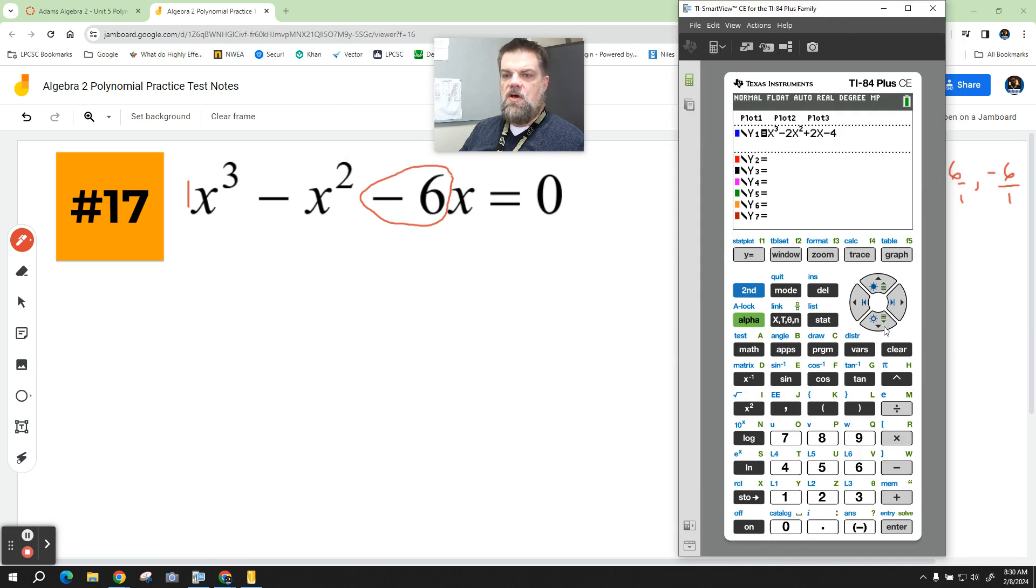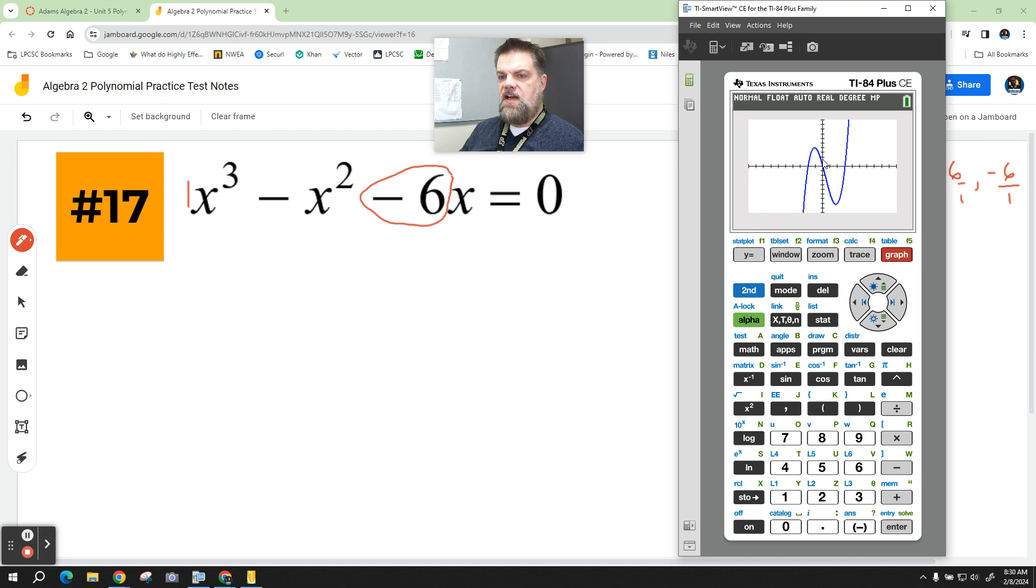So we're just going to say x cubed minus x squared minus 6x, and we just graph it. And so it looks like it crosses at negative 2, 0. Oh, I forgot about 0. Negative 2, 0, and positive 3.